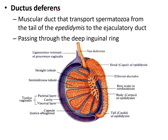The next structure is the ductus deferens, otherwise called the vas deferens. It is a muscular duct that transports spermatozoa from the tail of the epididymis to the ejaculatory duct. It passes through the deep inguinal canal.